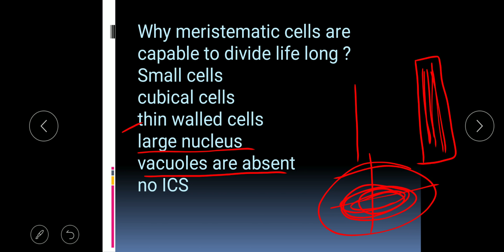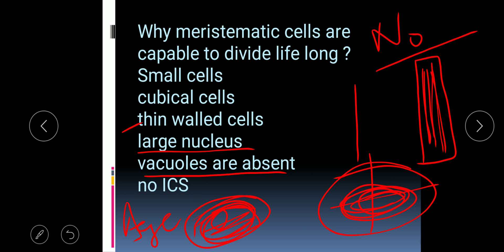Vacuoles are absent in meristematic cells. As you have seen in the previous chapter, the number of vacuoles in an animal cell depends on the age of the cell — if the age of the cell is very less, there will be no vacuole. So when vacuoles are absent, the cell cannot accommodate the extra substances formed by metabolic activity, leaving cell division as the only option.